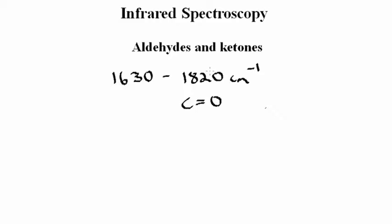However, because several different functional groups contain a carbonyl group, it's often not possible to tell from absorption in this region alone whether the carbonyl-containing compound is an aldehyde, a ketone, carboxylic acid, an ester, or an amide.